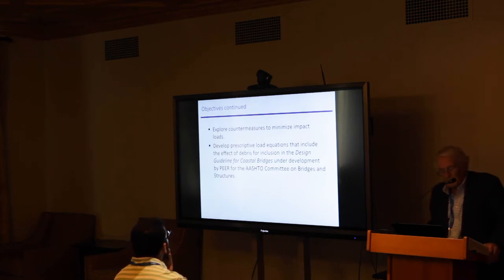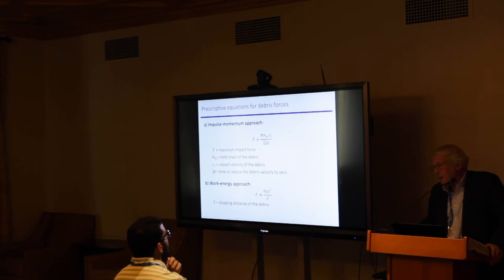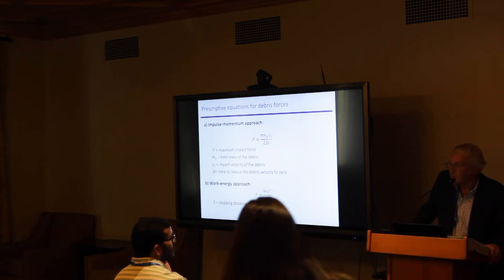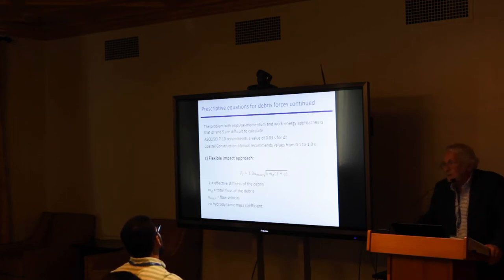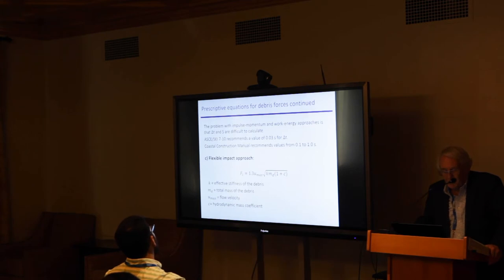What's currently used, borrowed from the building world, there are at least three approaches, and they all have issues. The impulse momentum approach: the debris force is a product of the mass, the velocity of impact, divided by the time it takes to reduce the debris velocity down to zero. The work energy approach: mass times velocity squared divided by the stopping distance of the debris. Both of these have problems in not having wide agreement as to what delta T or S should be, and those documents give quite a wide spread for such parameters.